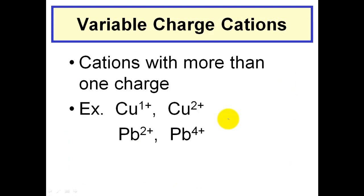An example of a variable charged cations would be something like copper. Copper has a 1 plus charge, but it could also have a 2 plus charge. So variable meaning more than 1 charge. So it's a cation that could have different charges. So we can't just say copper is a 2 plus because it might not be. It might be a 1 plus. Same way with lead. Lead could be a 2 plus or a 4 plus. So because they have more than 1 charge, it's going to have different rules of when we use them in naming ionic compounds.